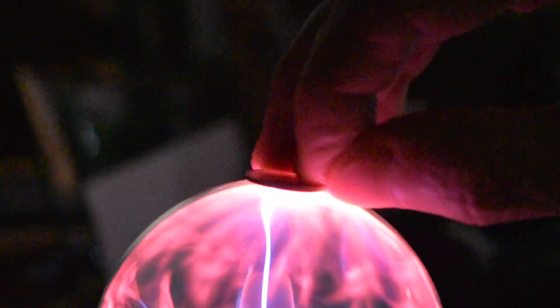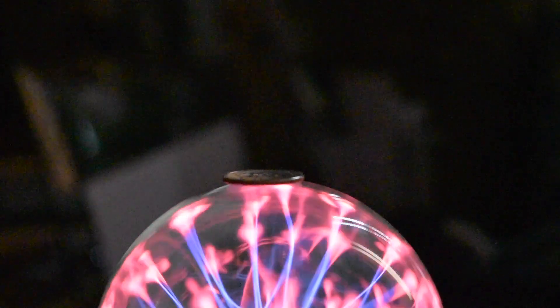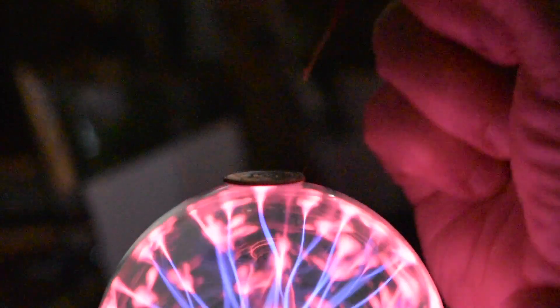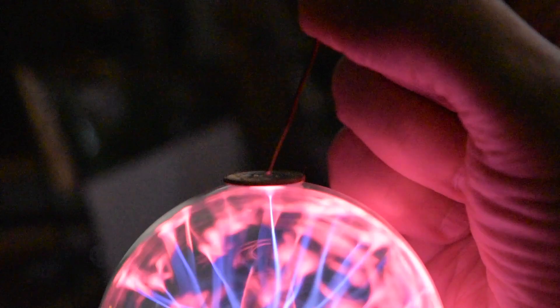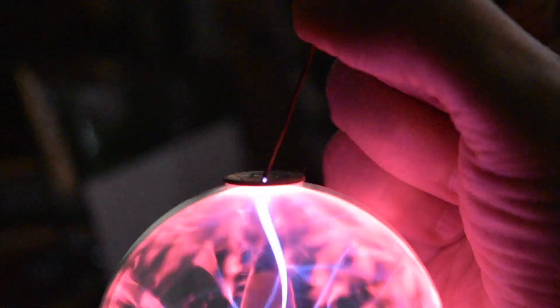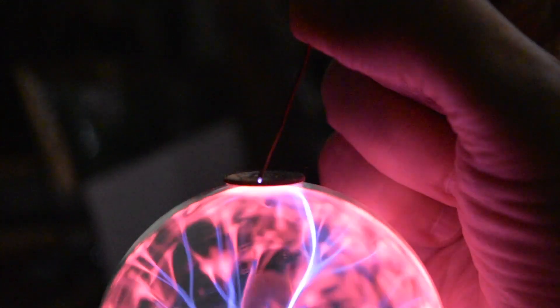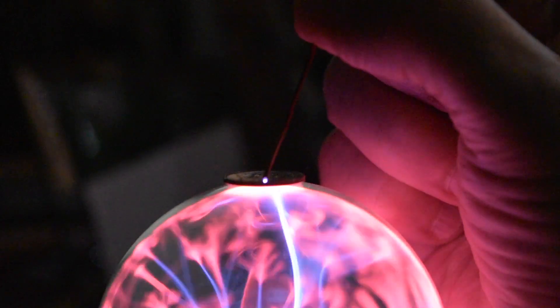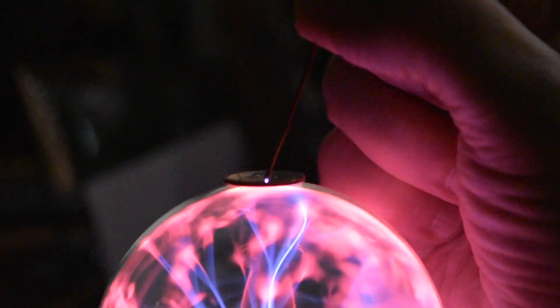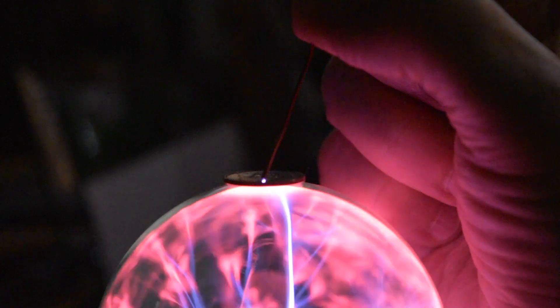I'm going to place a dime on top of the globe. I'm now going to bring a wire close to the dime, and when I get close enough I'll get ionization of the air between the wire and the dime. I have to get closer than a millimeter to get the ionization to occur.